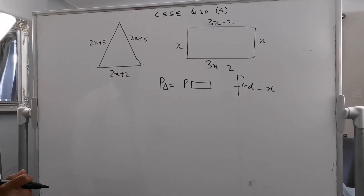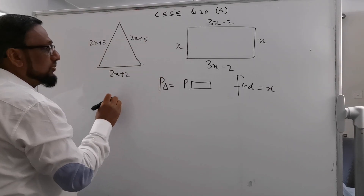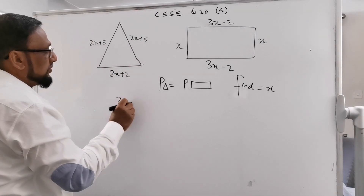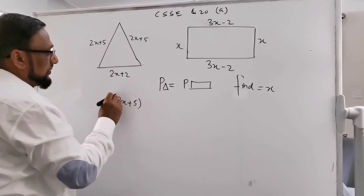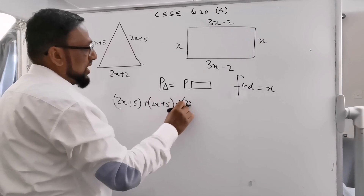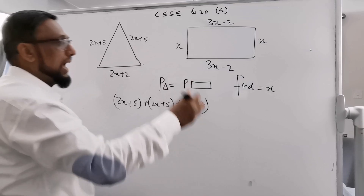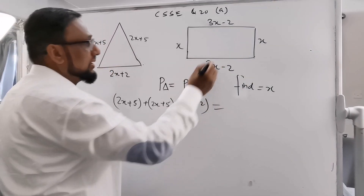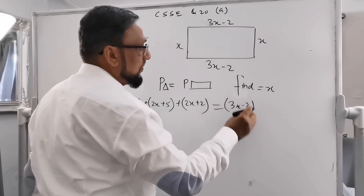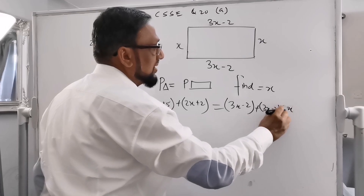Perimeter means to add all sides. So the perimeter of the triangle is: 2x plus 5, plus 2x plus 5, plus 2x plus 2. This equals the perimeter of the rectangle: 3x minus 2, plus 3x minus 2, plus x, plus x.